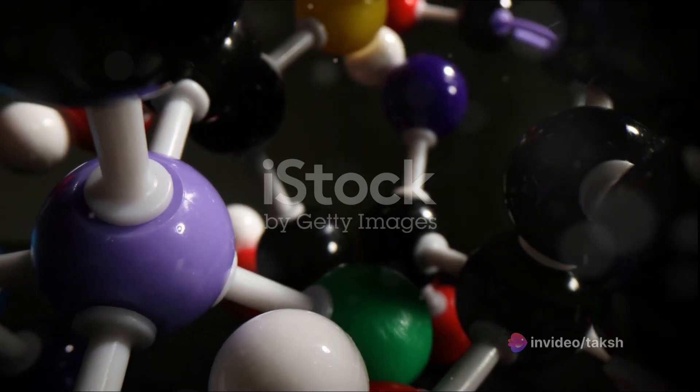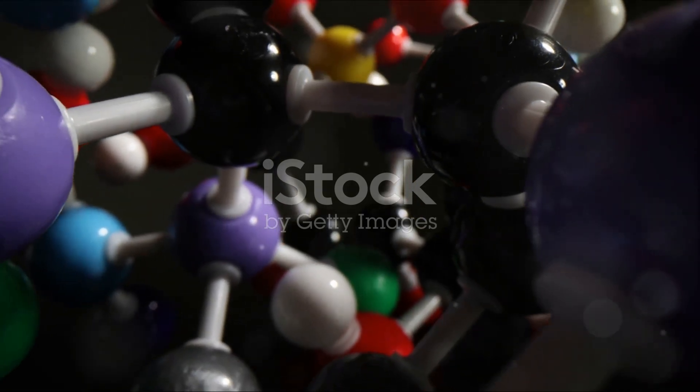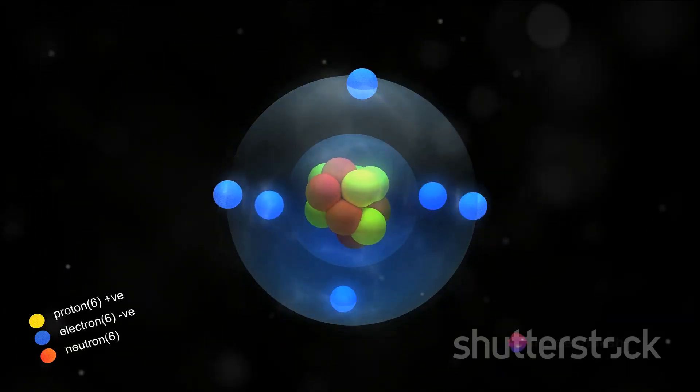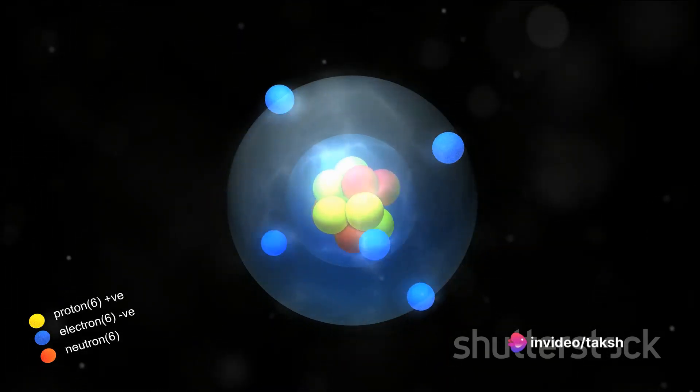Alkanes, often referred to as saturated hydrocarbons, are characterized by single bonds between carbon atoms. Picture a chain with each link representing a carbon atom, and the joining of the links representing single bonds.